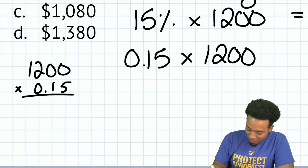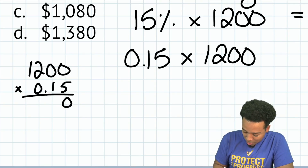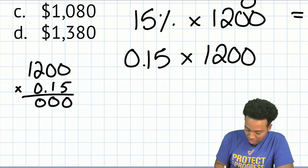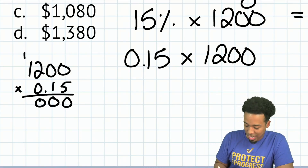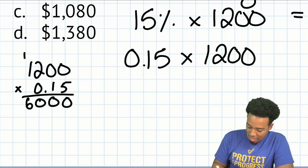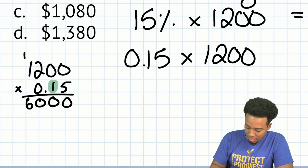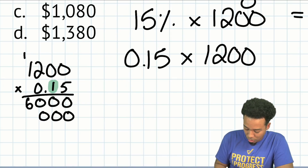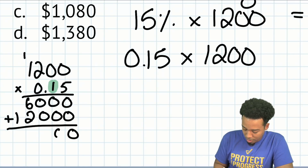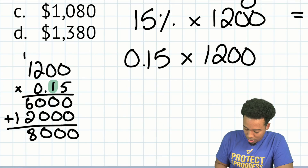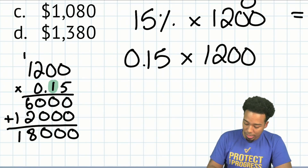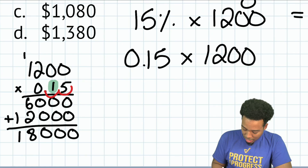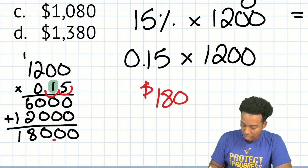I'm hoping there's going to be at least 10 people here who have a light bulb moment. When we calculate 1,200 × 0.15, working through the multiplication step by step, then moving the decimal place back two times, we get $180.